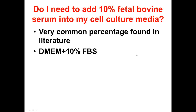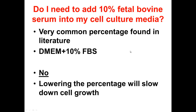First question: do I need to add 10% fetal bovine serum into my cell culture media? This is a very common percentage found in literature. If you go read any paper that involves cell culturing, chances are they are using DMEM or MEM with 10% FBS. And the answer is actually no. Lowering the percentage will slow down cell growth. So if you want your cells to grow more slowly, you can do so by adding media with lesser percentages of FBS. 10% is what I usually stick with, but there is the option of going lower. It's not the end of the world if the concentration is not 10%. You can go higher than 10%, but I don't really think that's necessary.